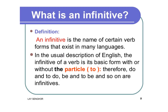What is an infinitive, students? Let us read. An infinitive is a name of certain verb forms that exist in many languages. In the usual description of English, the infinitive of a verb is a basic form with or without the particle 'to'. Therefore, 'do' and 'to do', 'be' and 'to be', and so on are infinitives.